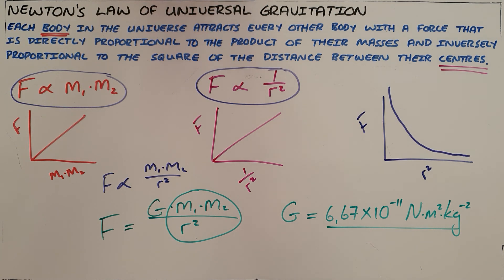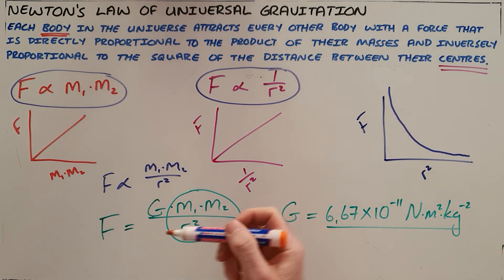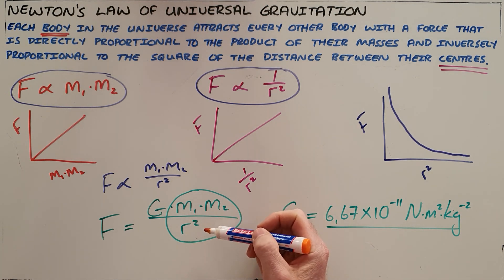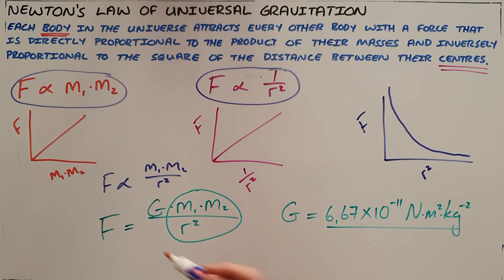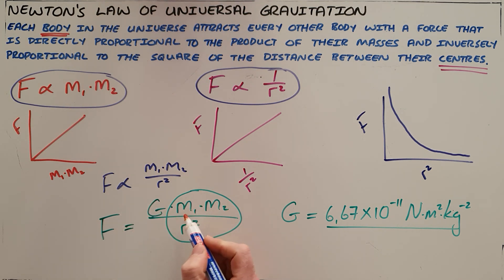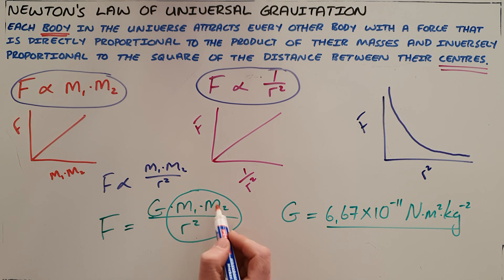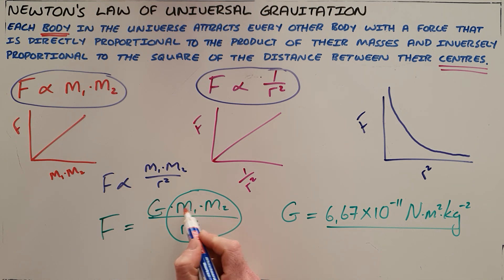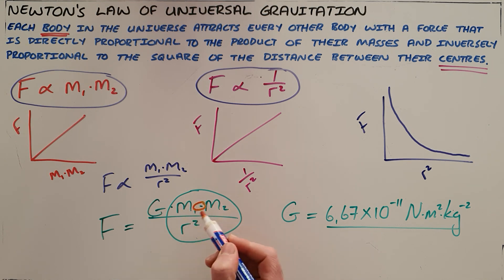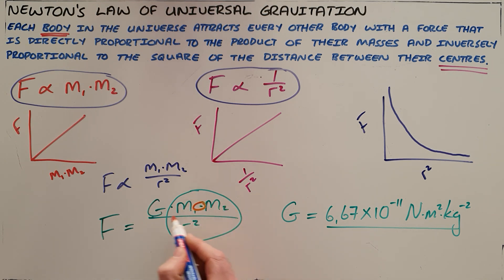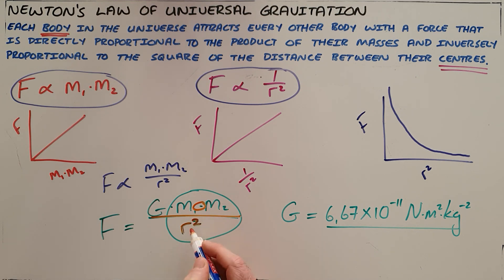We can now also see why it is possible to derive the definition from the formula, because this formula tells us that there is a force between every two objects with mass, and that force is directly proportional to the product of their masses and inversely proportional to the distance between their centers squared.